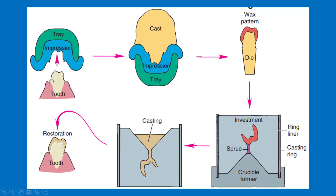First, the tooth is prepared, then an impression is taken of the tooth with a suitable impression material. After that, the impression is poured with stone. After the stone hardens, the abutment tooth in the cast is prepared to form a die.